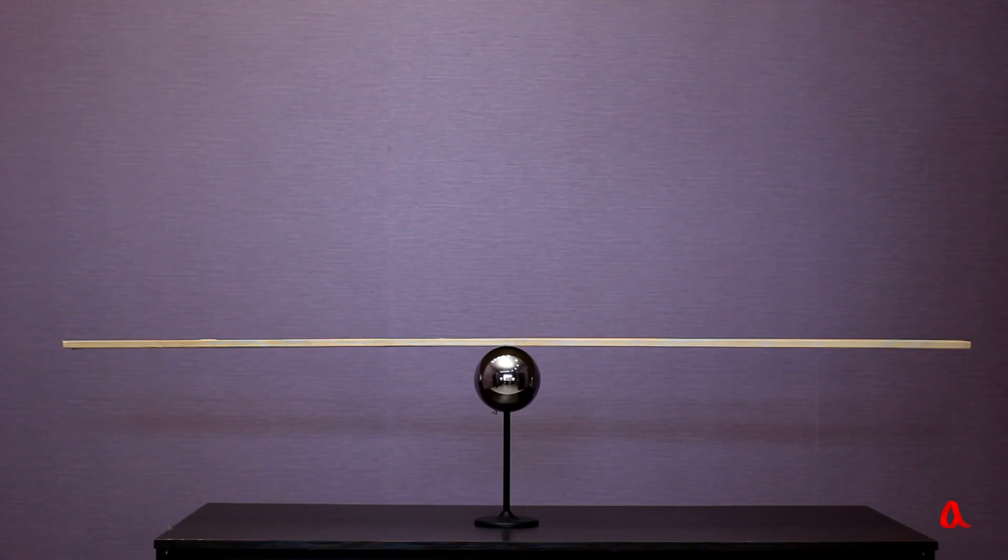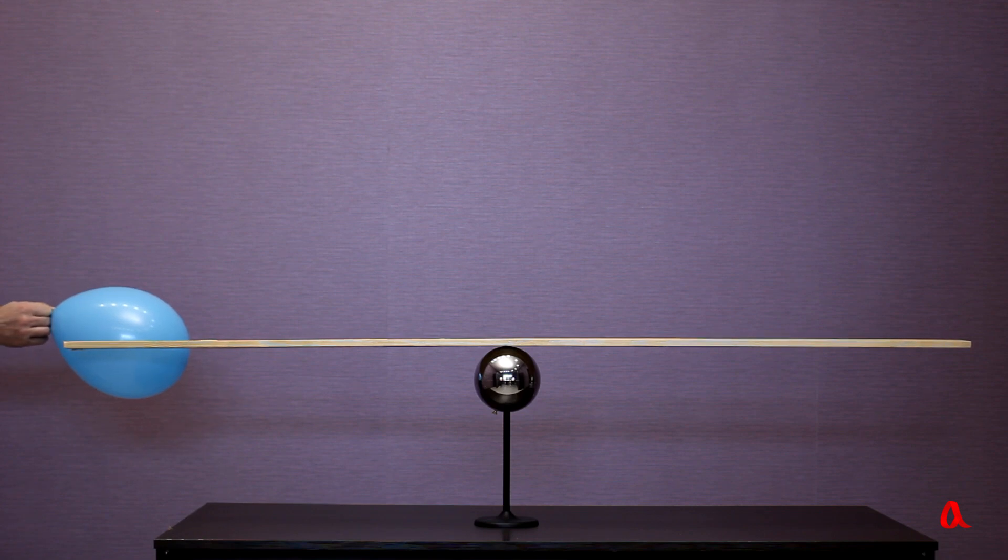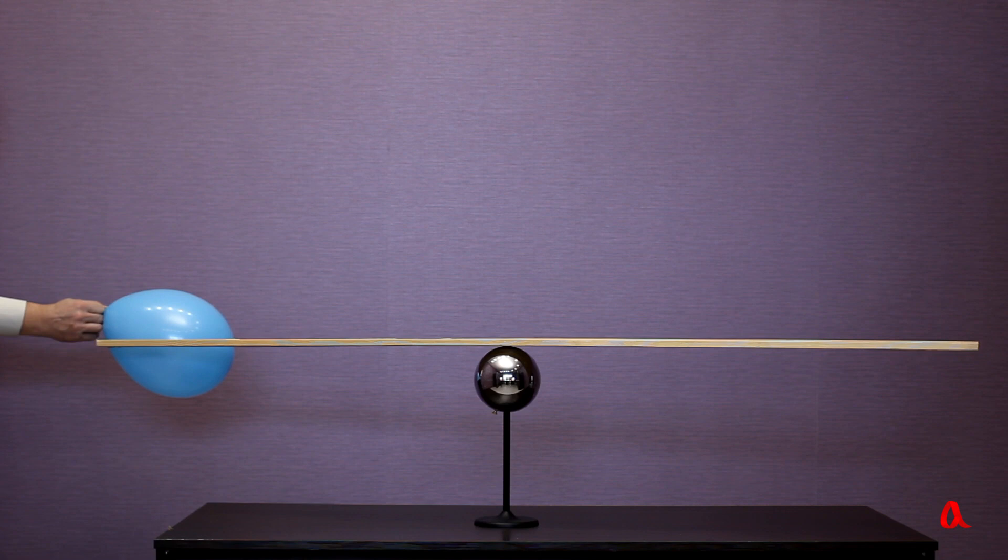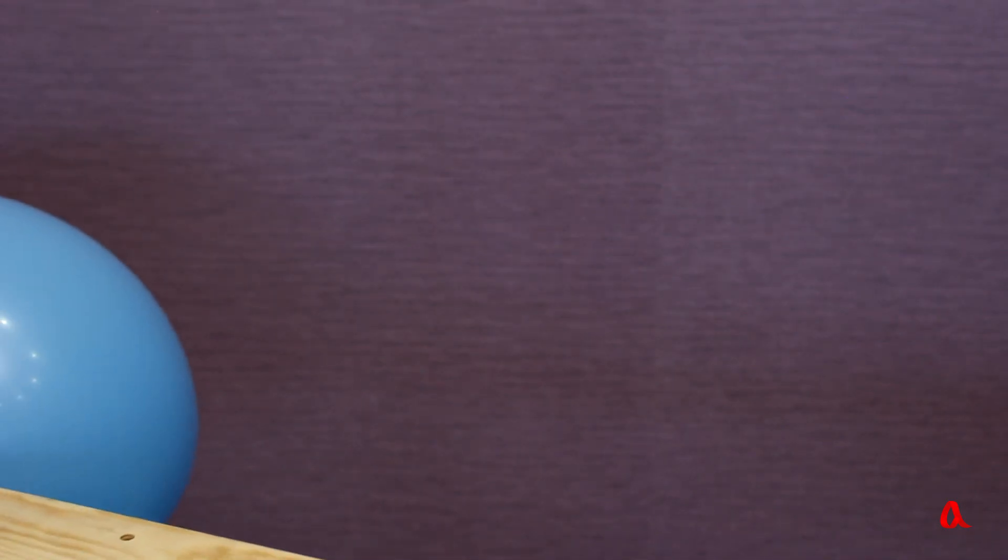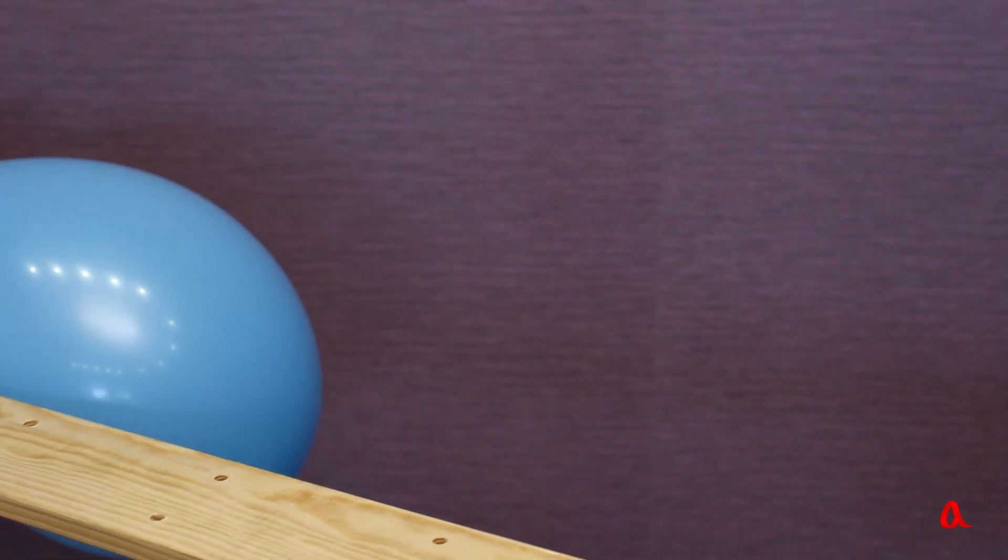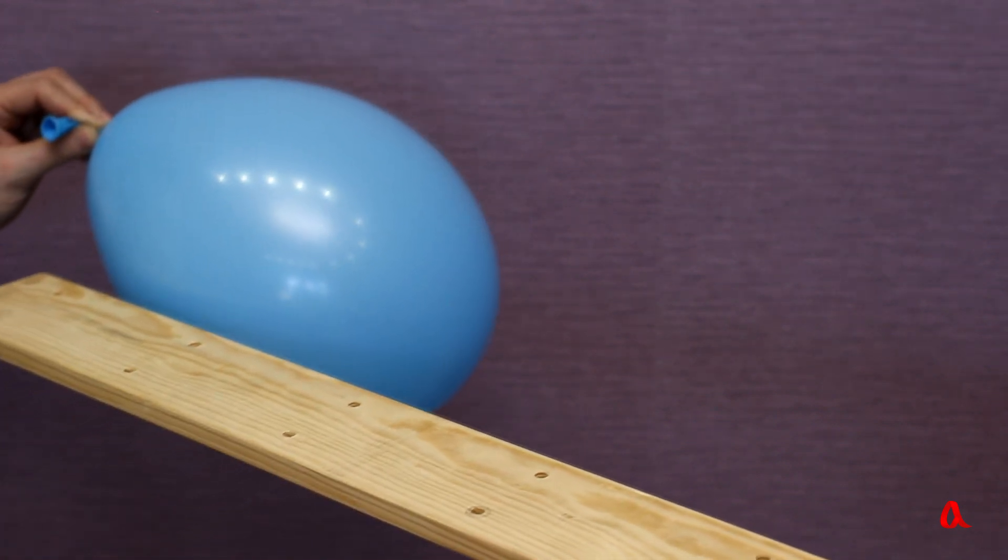Let's carry out one more wonderful experiment. We bring a balloon charged by rubbing close to a balanced wooden plank. The plank is attracted to the balloon although it has not been charged before. Why does this happen? We are going to talk about it in our next video. Thank you.